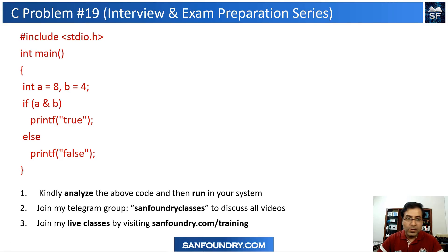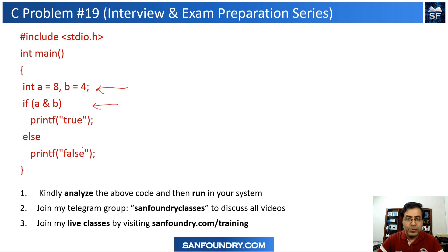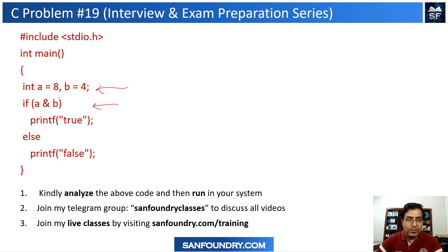Dear friends, in this particular problem, we are going to look into your understanding of bitwise operations. This is a fairly simple code and a very small problem. We have the value of a as 8 and the value of another integer b as 4. We are trying to do an a AND b, and you should tell whether the answer is going to be true or false.